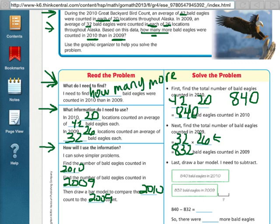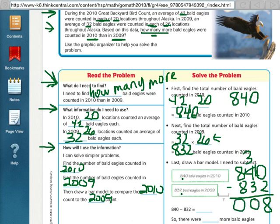So, then last is draw a bar model, because I need to subtract. So, 840, take away the 832. 840 minus 832. Borrow here. That's an 8. That's a 0. That's a 0. So, the answer is, there were 8 more bald eagles in 2010 than there were in 2009.